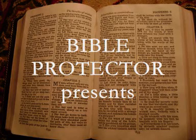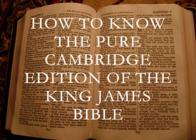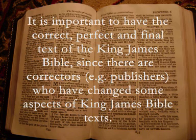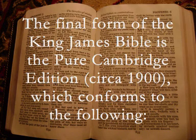This is Bible Protector talking about how to know the pure Cambridge edition of the King James Bible. It is important to have the correct, perfect, and final text of the King James Bible, since there are correctors — publishers — who have changed some aspects of King James Bible texts. The final form of the King James Bible is the pure Cambridge edition, circa 1900.